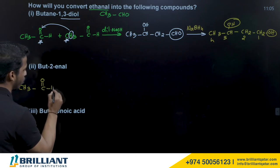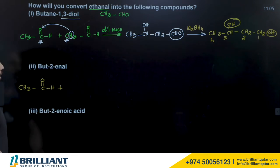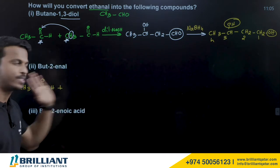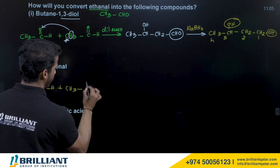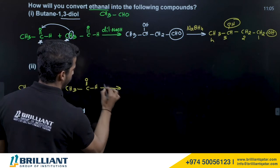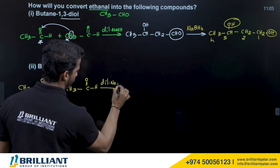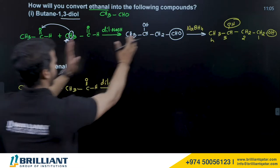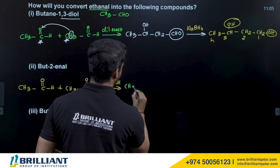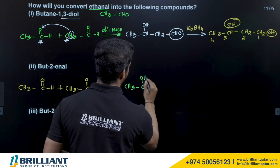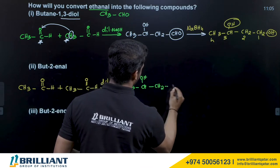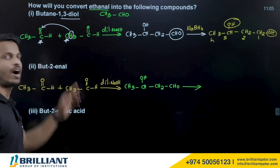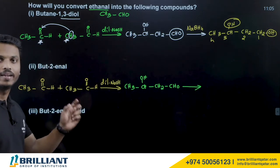Next: convert ethanol to but-2-en-1-ol. Starting material is again CH3CHO. Since we need 4 carbons total, the first step is definitely aldol condensation with dilute NaOH, giving the same intermediate: CH3CHOH–CH2–CHO.